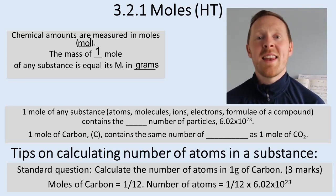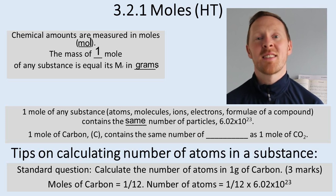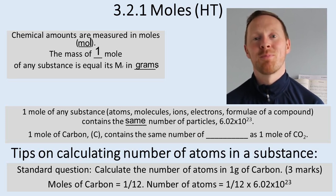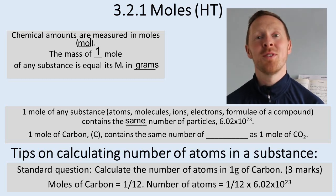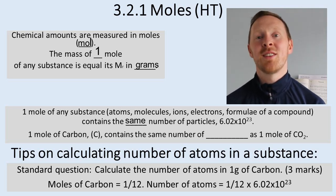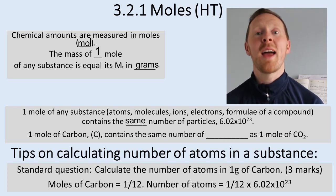So one mole of any substance contains a set amount of particles. This is called Avogadro's number and it goes 6.02 times 10 to the 23. So 6.02 times 10 to the 23 is the number of atoms in one mole of any substance.